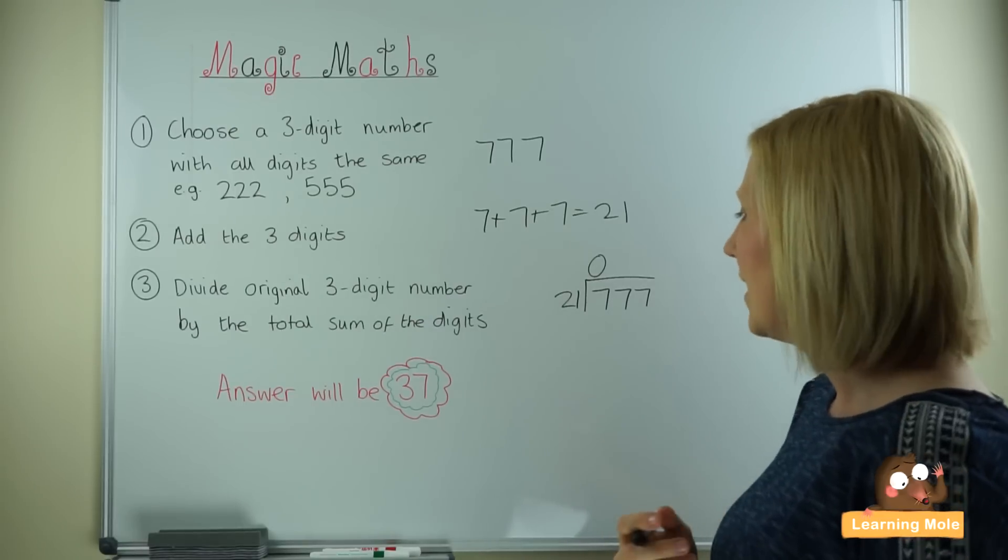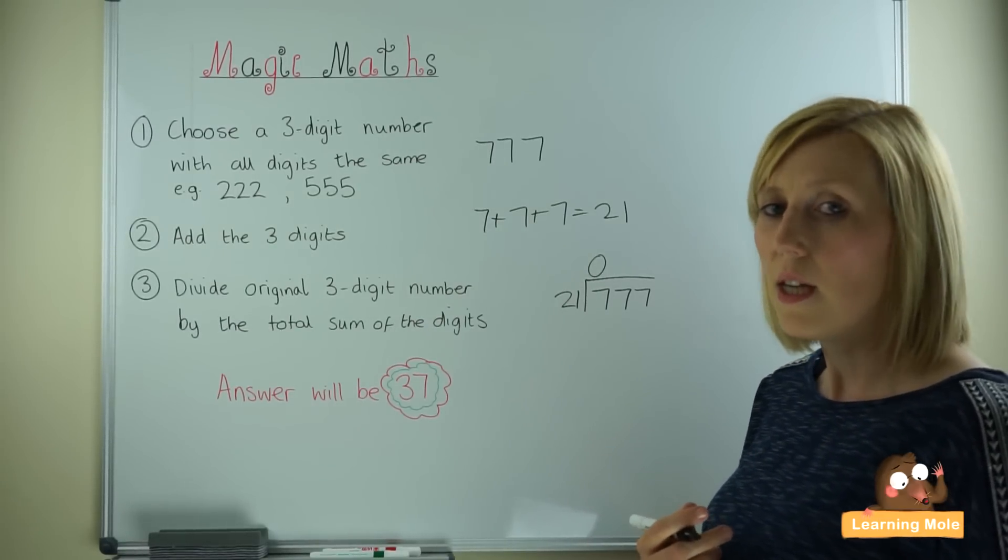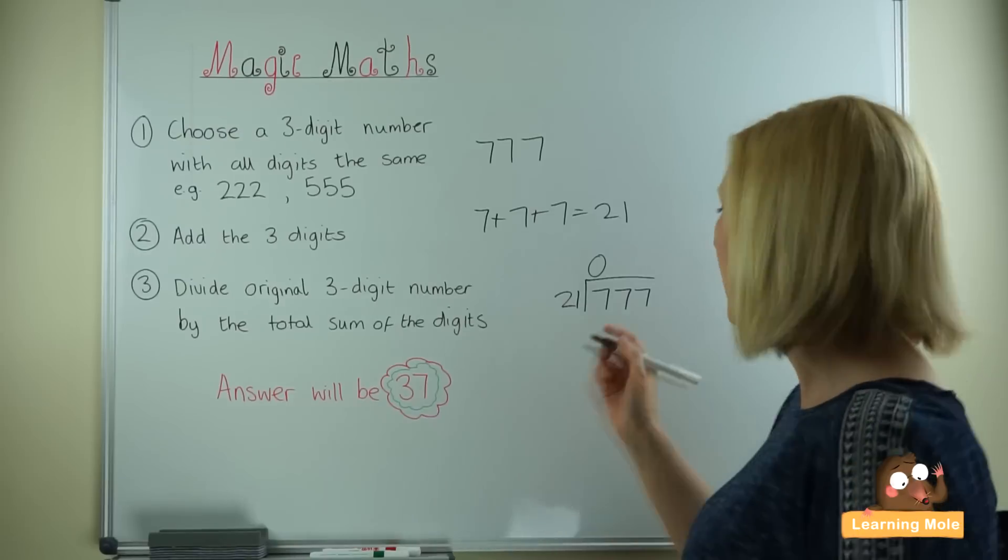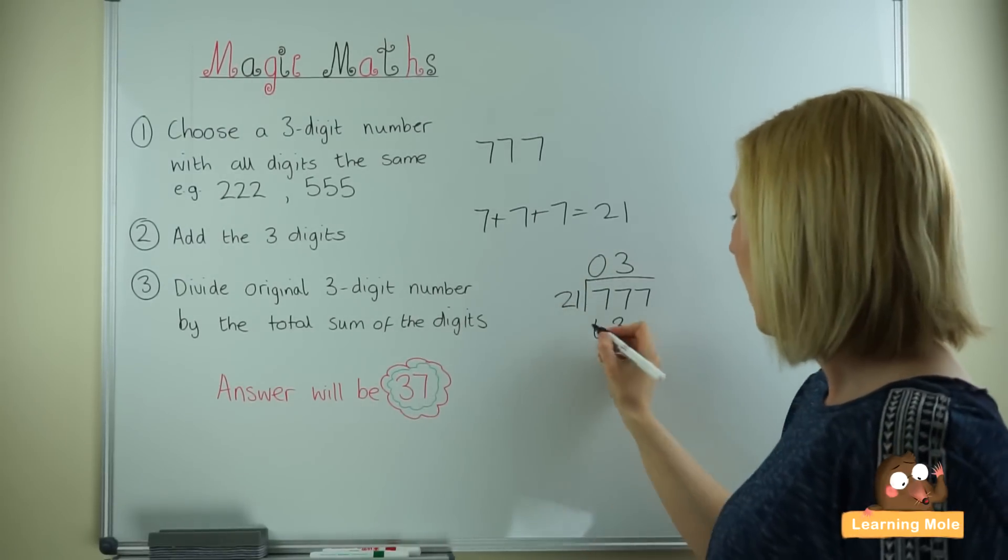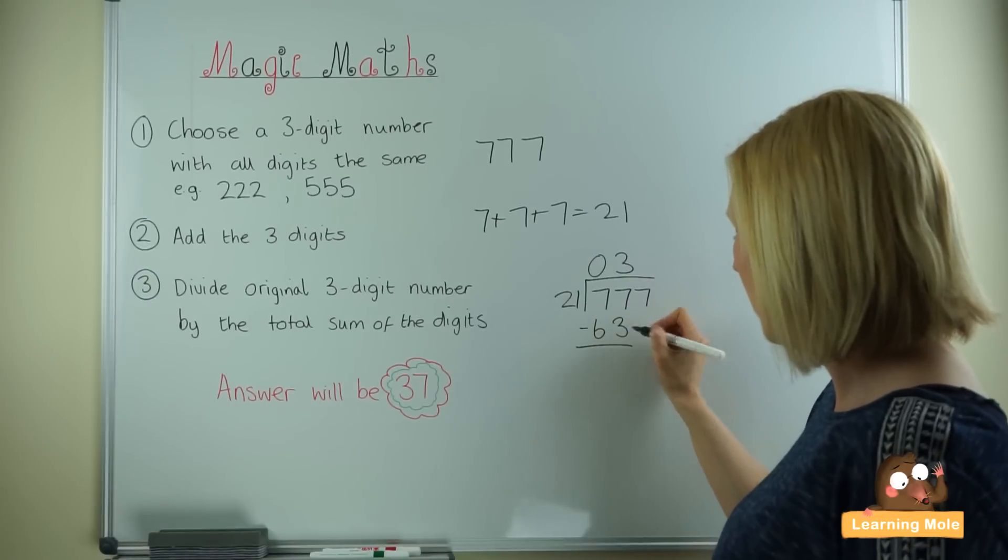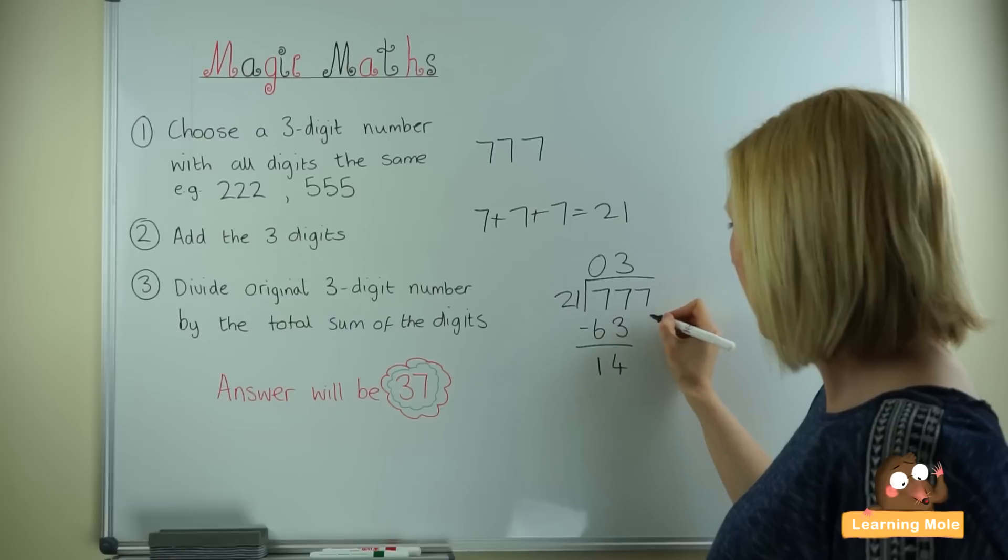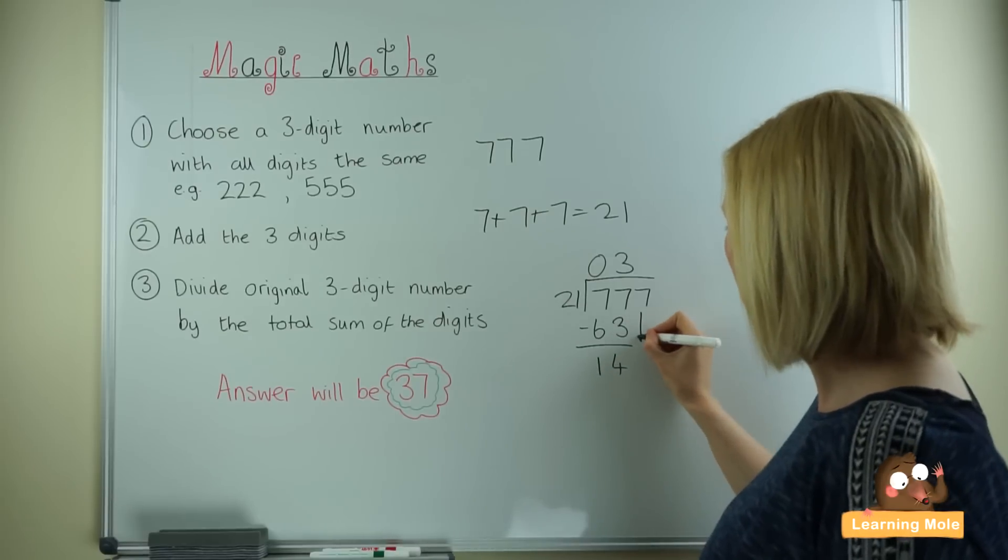Then we look at 77. The closest number is 63, which is 21 times 3, so we put our 3 up there and subtract. 7 take away 3 is 4, 7 take away 6 is 1. Of course, 21 can't go into 14, so we bring down our units.